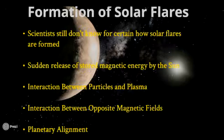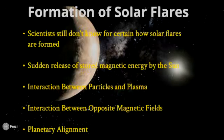Scientists still don't know for certain how solar flares are formed, but there have been a couple of theories. Some scientists believe that a sudden release of stored magnetic energy by the sun can cause solar flares. Unfortunately, there's not enough information on how magnetic fields operate on the sun's surface, so this theory is still under investigation.